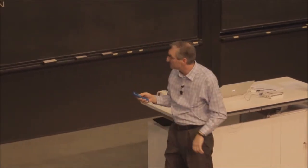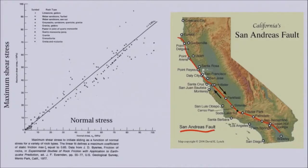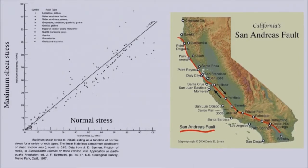So it's just like the friction that we've been talking about. This line shows — for a whole bunch of different kinds of rock — what the maximum shear stress is. Stress is force per unit area, so force per unit area of the surface or the interface between the two slabs of crust, versus the normal stress at the time when an earthquake causes sliding.